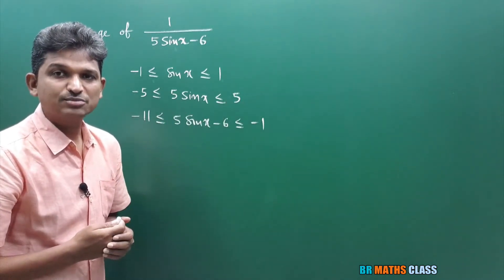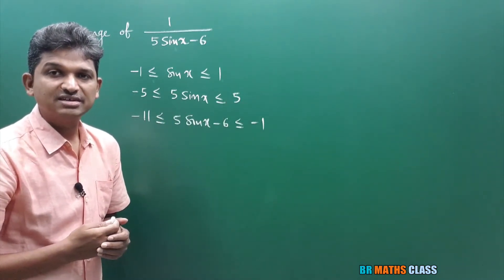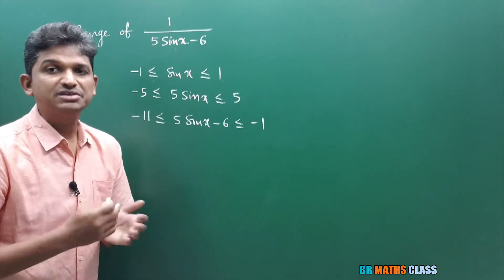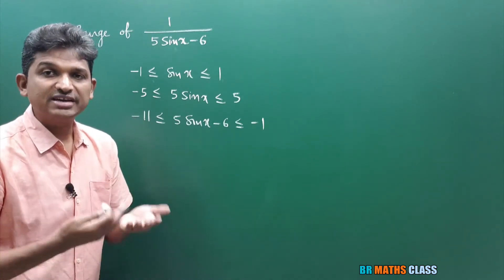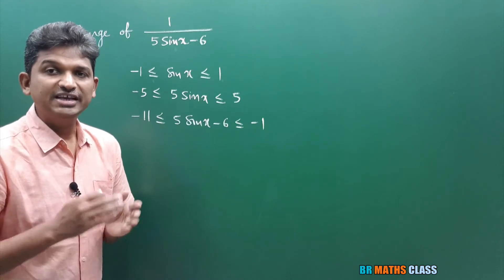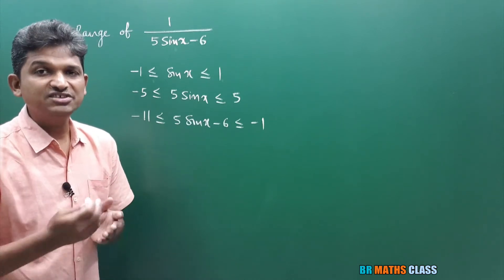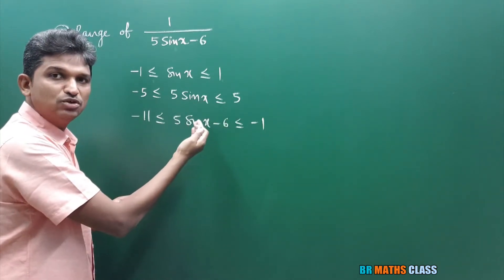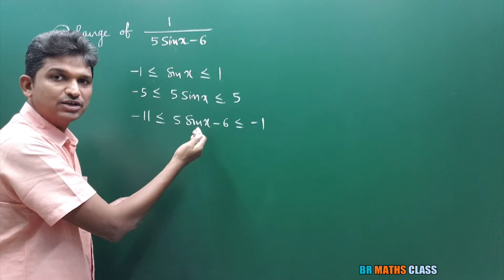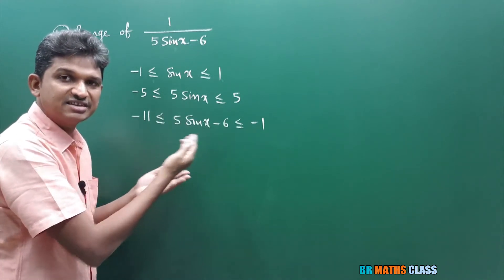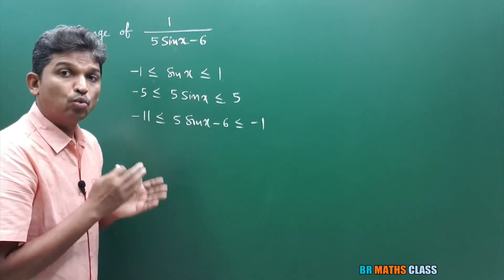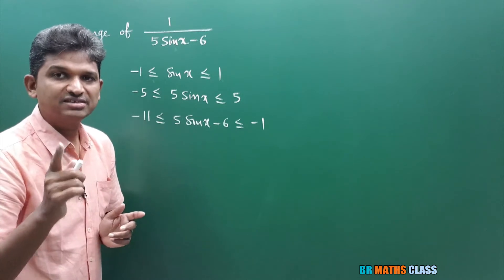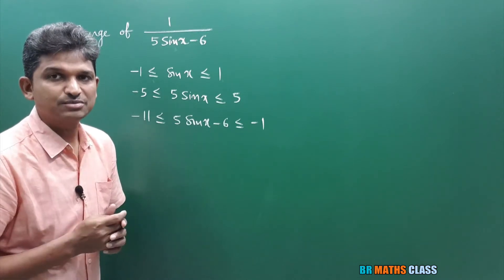Just now, in the last problem, we discussed that for an inequality, when both numbers are negative, when you do their reciprocal, the inequality sign changes. So whatever value you take here is clearly negative, so I can write its reciprocal directly.